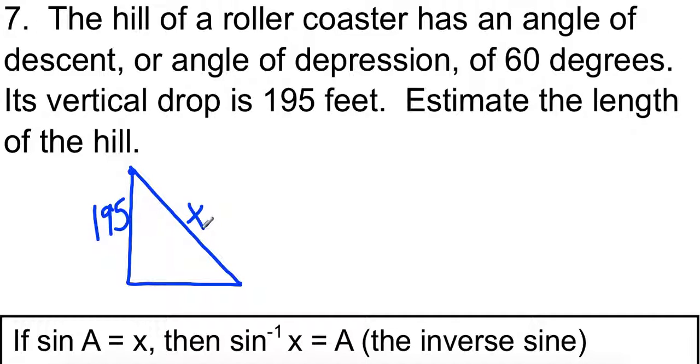So here's how angles of depression work. They are from your perspective. This is you at the top of the roller coaster looking down. Angles are always measured from the horizontal. So if you look straight out like this, 60 degrees is measured down from there. Okay, so that's where the 60 degree angle is. Now you'll notice that 60 degree angle is not in our triangle, so we need to fix that.